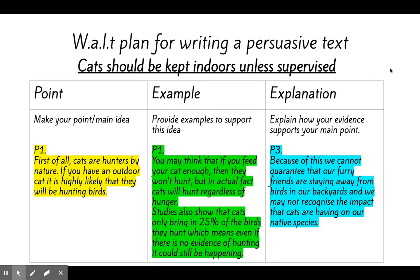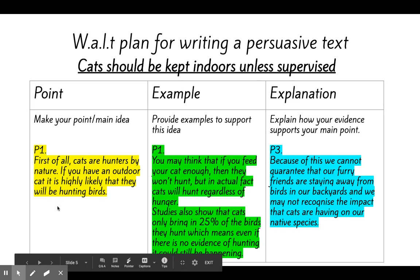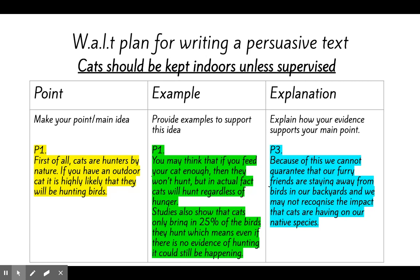So the argument is: cats should be kept indoors unless supervised. That is your main point, which you would introduce in the introduction of your text. Then you would have a series of body paragraphs using the PEE format. For example, paragraph one: 'First of all, cats are hunters by nature. If you have an outdoor cat, it is highly likely that they will be hunting birds.' That's your main point for this paragraph, which relates back to your overall argument.